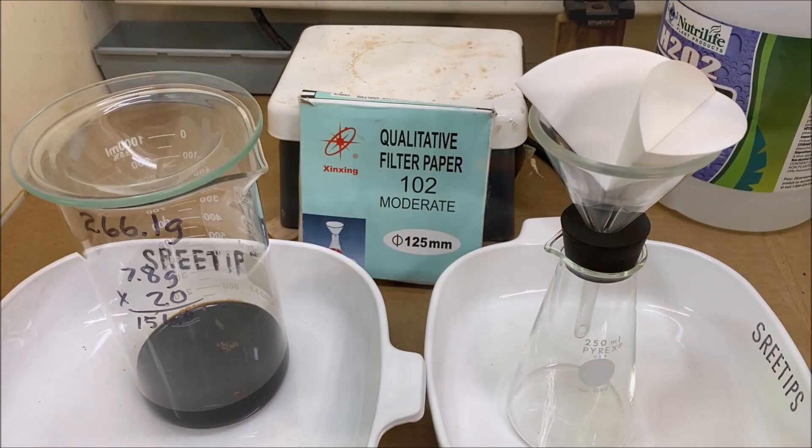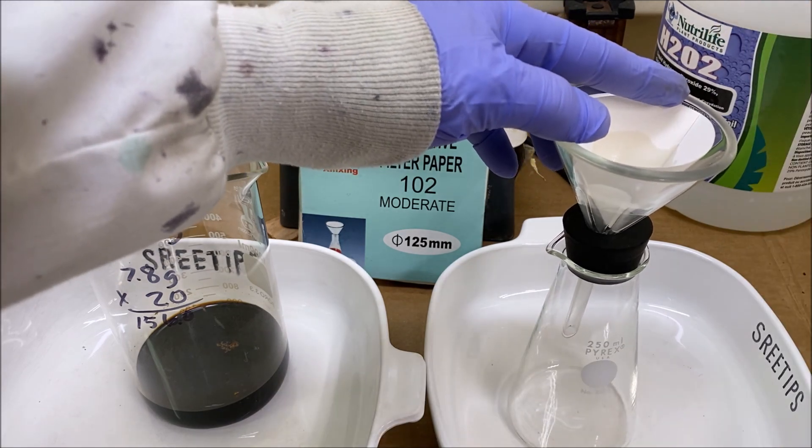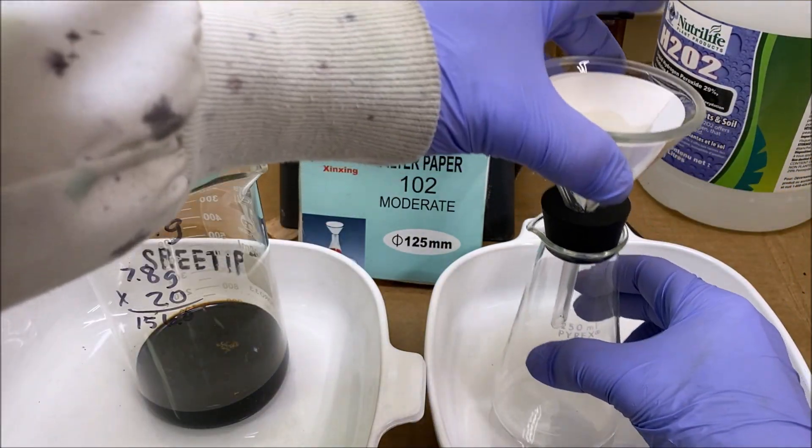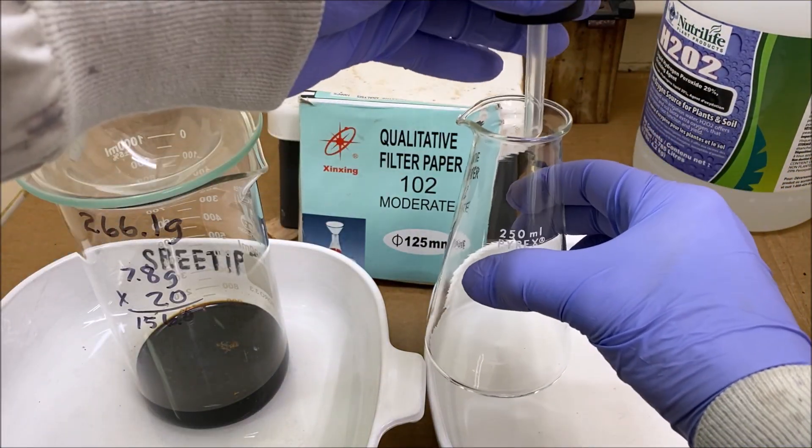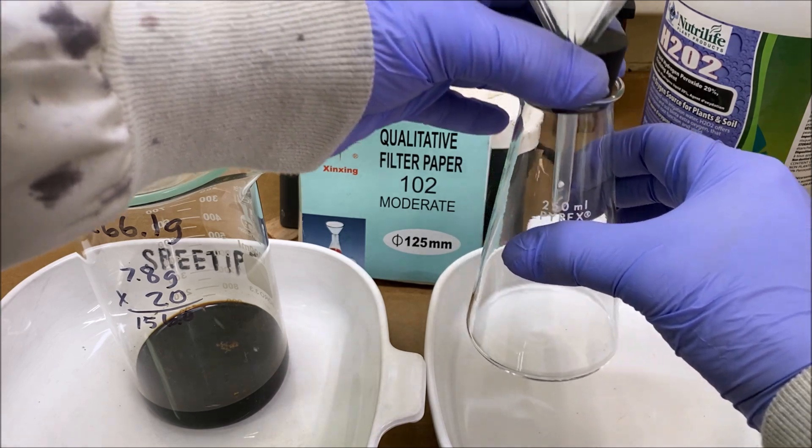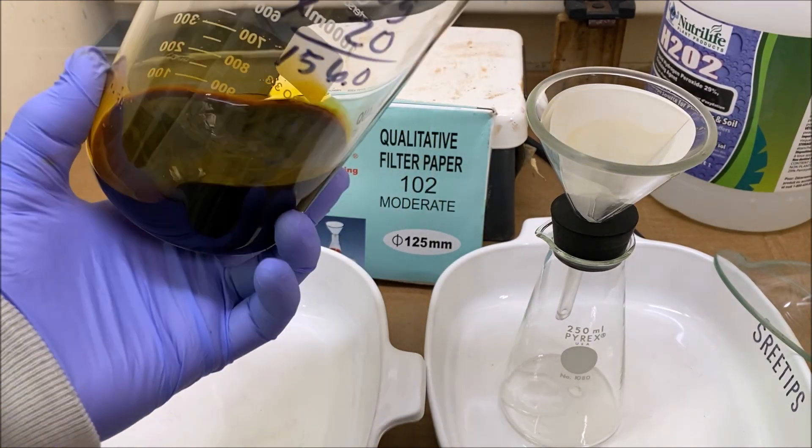Now what we'll do is filter our solution through this funnel into a fleeker, it's neither flask nor beaker. Here's our solution to the platinum metals.